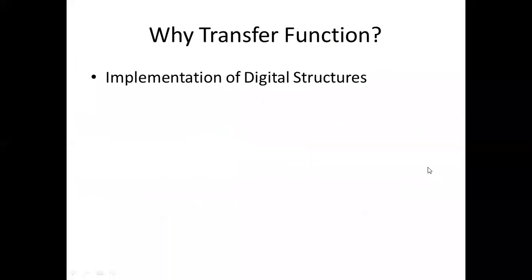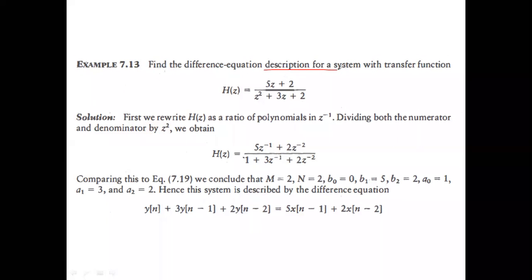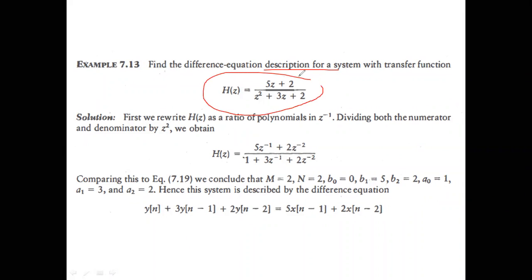We know why we use transfer functions. We started with this example yesterday. The question here is: find the difference equation description. They have given us the transfer function and want us to determine the difference equation. How did we do this? Given the transfer function, we did the cross multiplication, first making sure that everything is in negative powers of z.